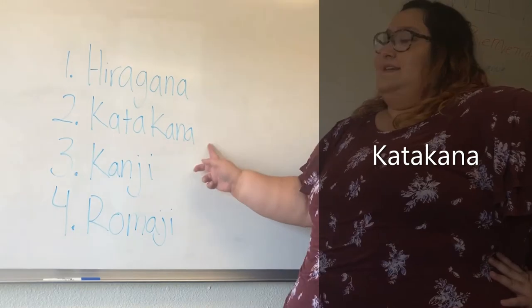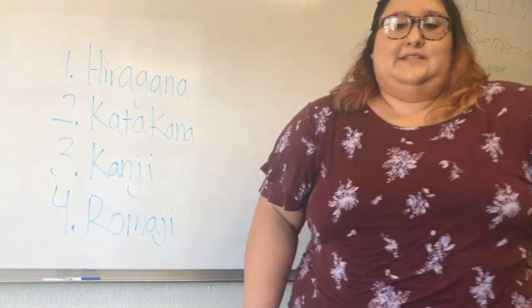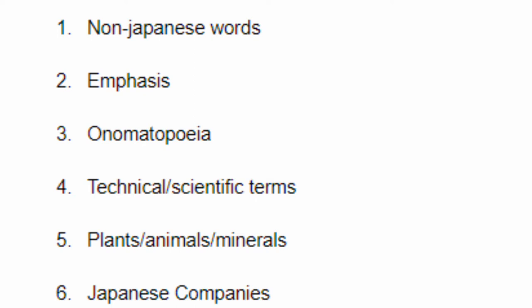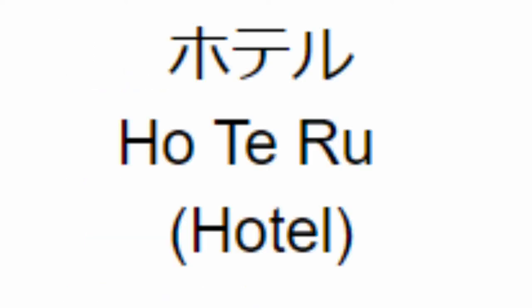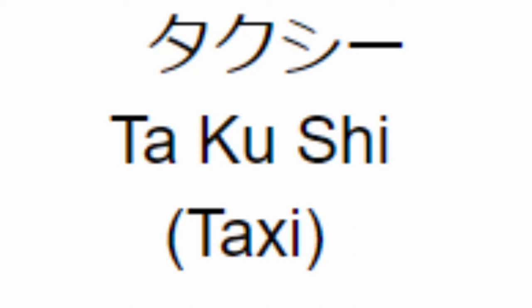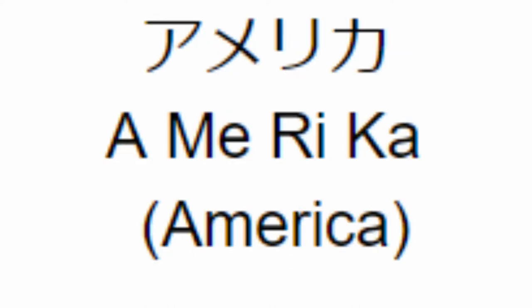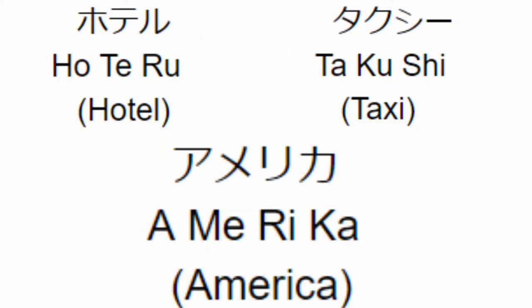The second character set is katakana. Katakana is used for characters denoting non-Japanese words, emphasis, onomatopoeia, technical or scientific terms, names of plants, animals, minerals, and Japanese companies. For example, hotel — hotteru, taxi — takushi, America — these are the types of words you'll see written in katakana.